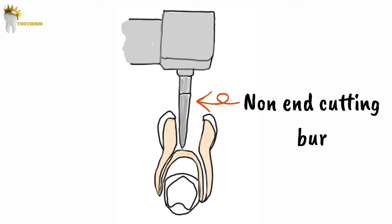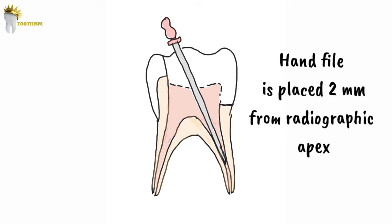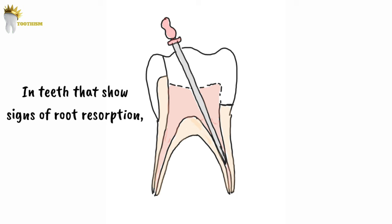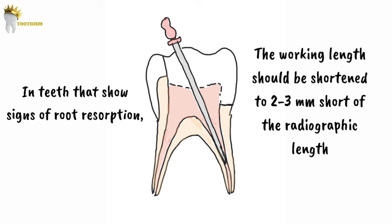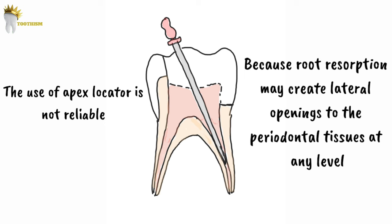The coronal pulp is amputated. Each canal orifice should be located and a properly sized barbed broach selected. The broach is used gently to remove as much organic material as possible from each canal. A pre-measured hand file is placed approximately 2 mm from the radiographic apex to prevent overextension through the apical foramen. Especially in teeth that show signs of apical root resorption, the working length should be shortened to 2-3 mm short of the radiographic length. The use of apex locators is not reliable because root resorption may create lateral openings into the periodontal tissues at any level.